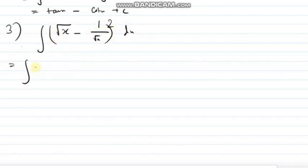Next, third sum. Suppose, if I will do this one. Integration of (√x minus 1/√x) whole square dx. So, if I will apply the formula of a minus b whole square, it will be a square plus b square minus 2ab, right?